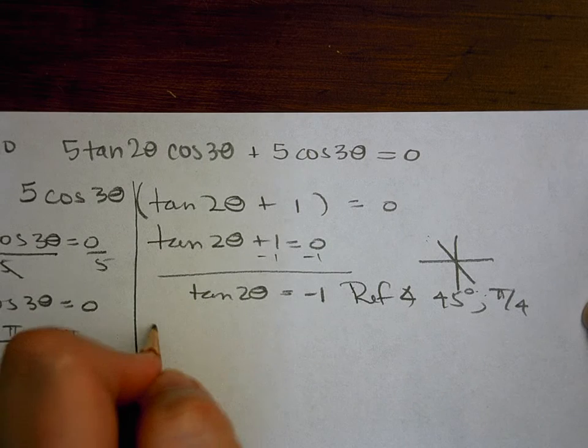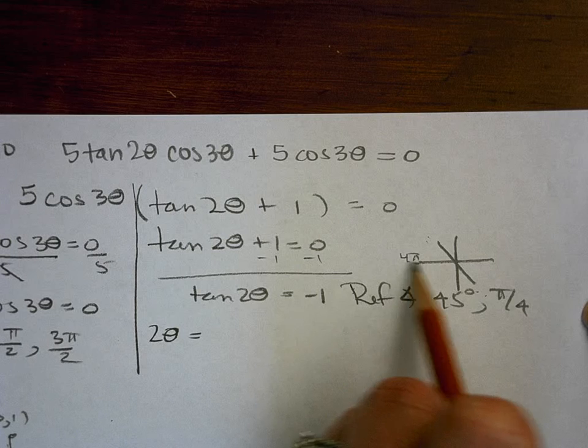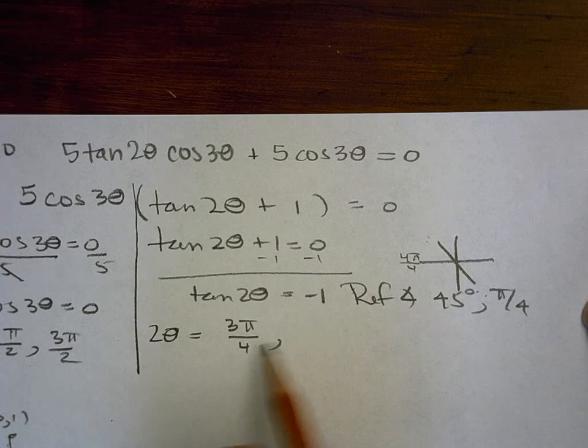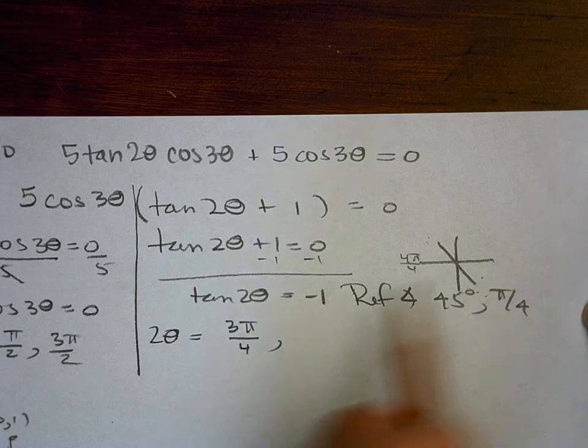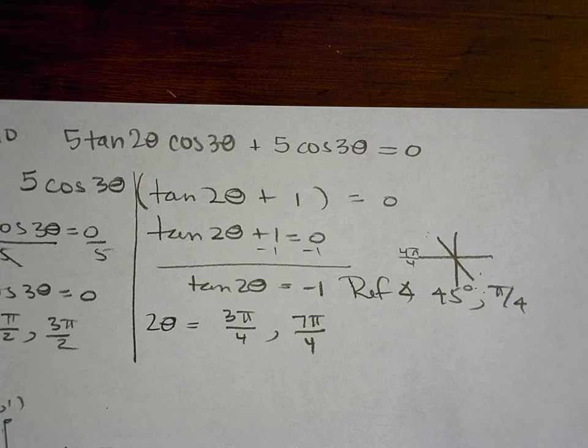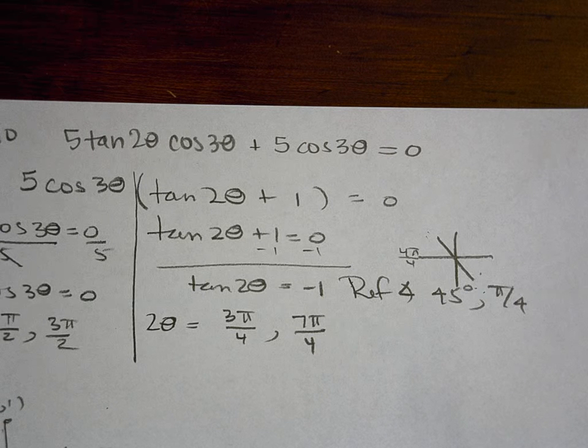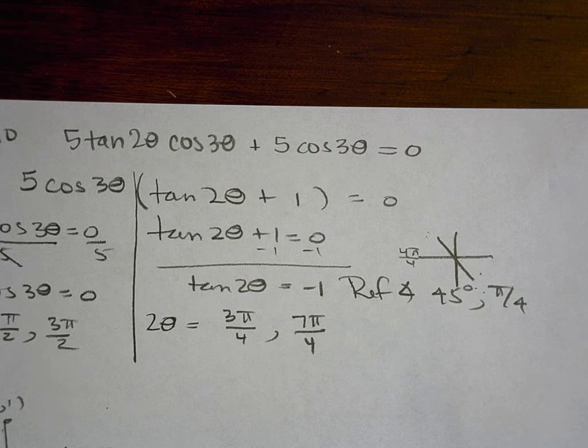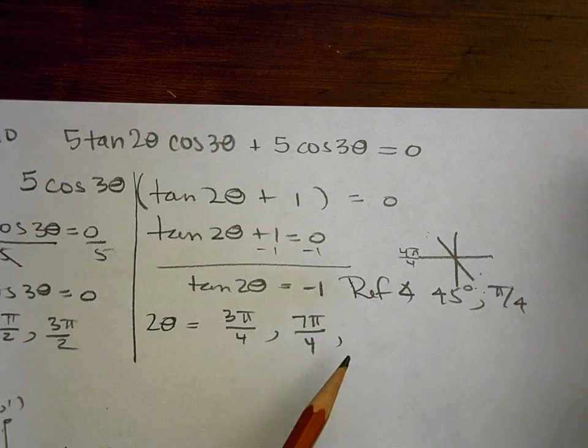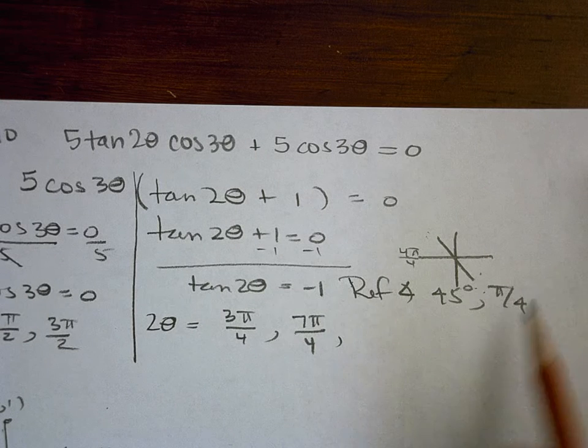And so then this would be, so 2 theta, so I'll put 4 pi over 4 here, so that would be at 3 pi over 4. And here would be 8 pi over 4, so 7 pi over 4. But then again I have to look at my rotation, so I have an angle of 2 theta, so that means I need to go through the unit circle twice. I've only been through it one time, so I need a second rotation, so it's coterminal angle, right, that's what we're finding. So I'm going to add 2 pi to both of those, but I want a common denominator. So if I'm going to add 2 pi, I want a denominator of 4.